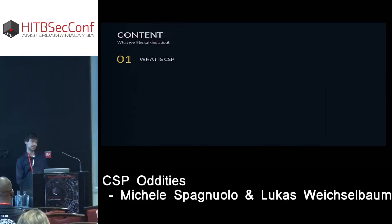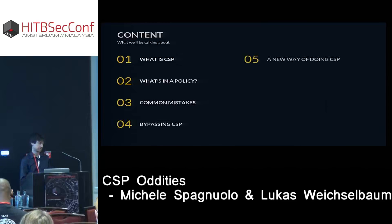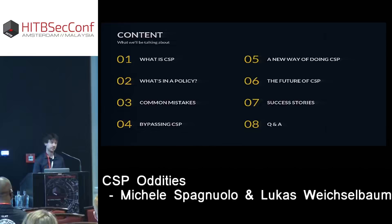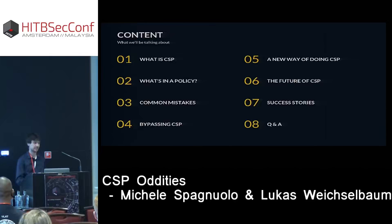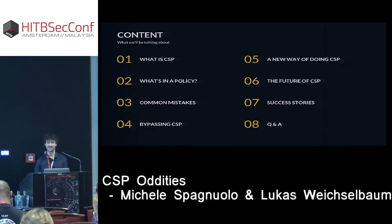First we talk about what CSP is, then we dissect a policy and show what's inside. Then we highlight common mistakes and how to bypass CSP. Then we switch from a destructive hat to a fixing hat and say how we can make it better, and how we are already making it better. If at any moment you have questions, I'd strongly encourage you to stop us and ask — I really like having questions during, not just at the end.